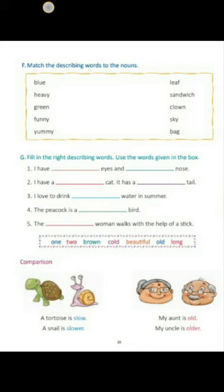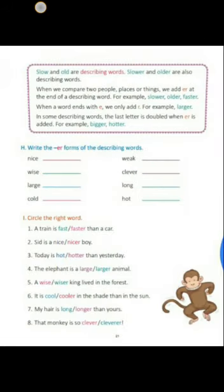Now come to comparison. What is comparison? Comparison means to compare between two persons or things, or more than two persons or things. We generally add '-er' at the end of the describing word for comparison. For example, 'nice' by adding '-er' becomes 'nicer.' That is the comparative form of a describing word. Now you have to add the '-er' form to all the given describing words.